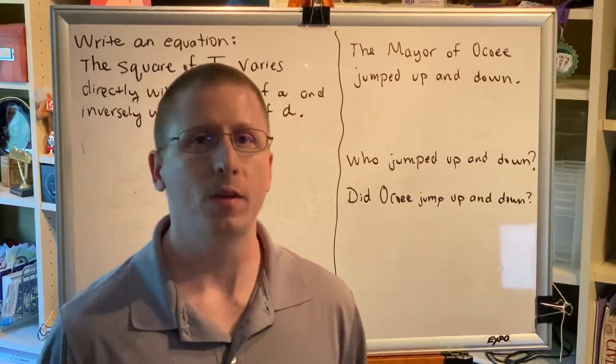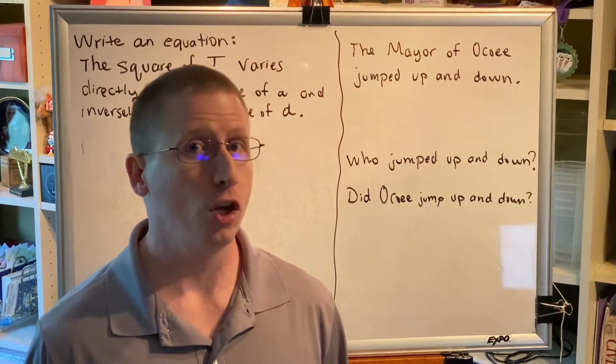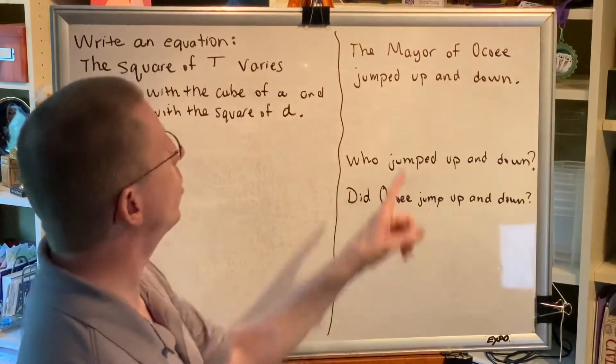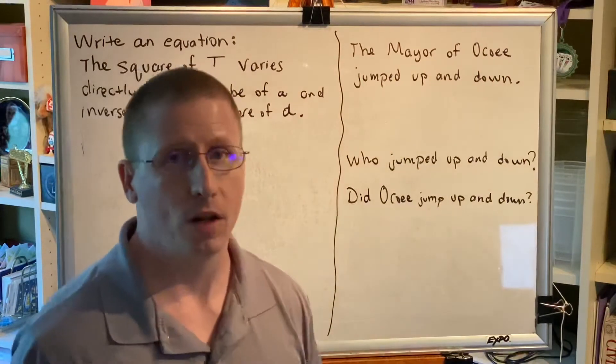No, Ocoee is a place, not a person. So when we ask the question, who jumped up and down, the answer would be the mayor of Ocoee jumped up and down.